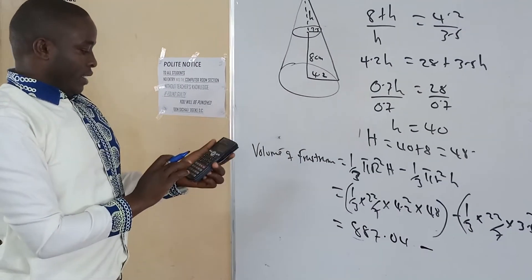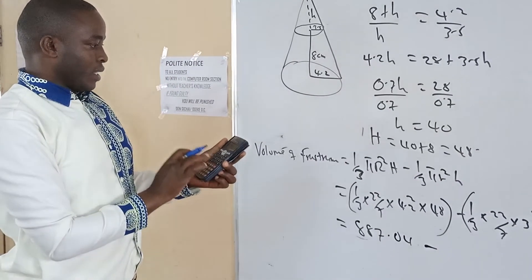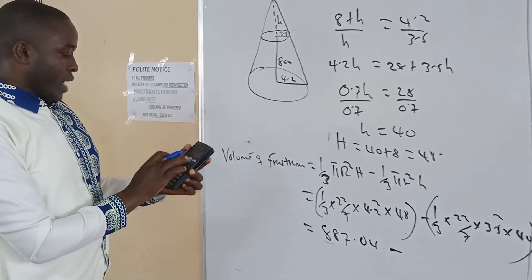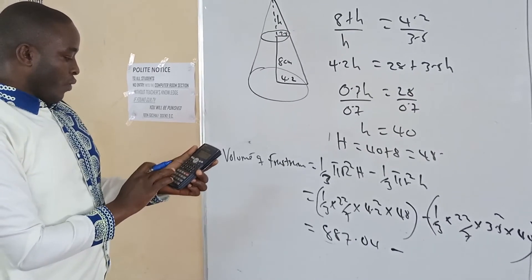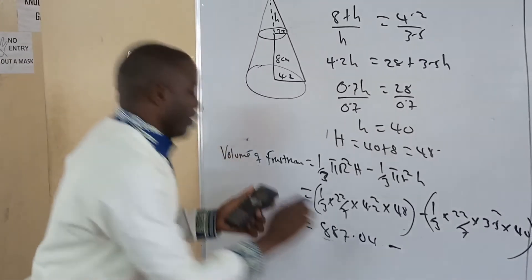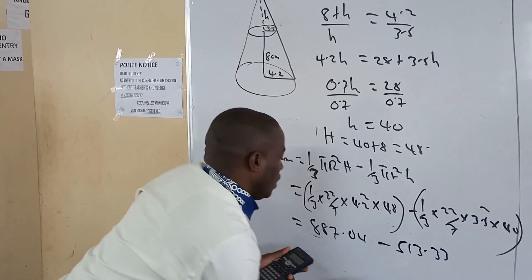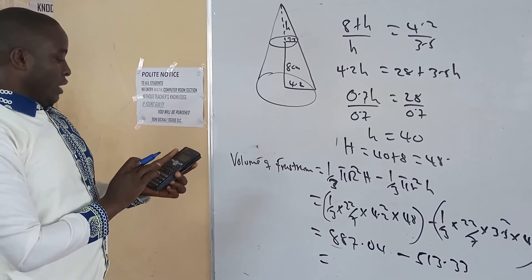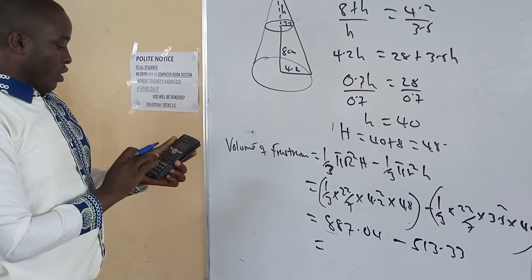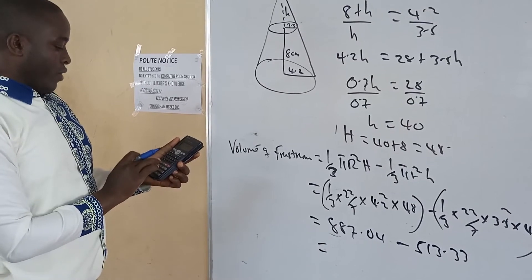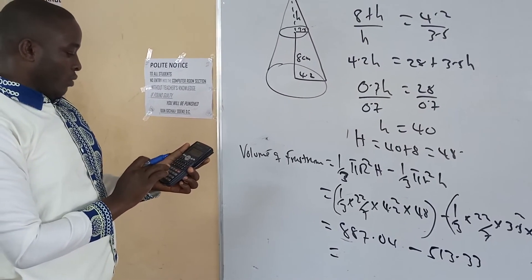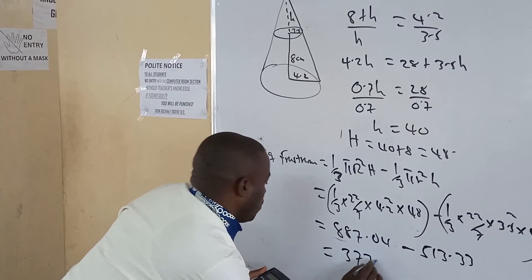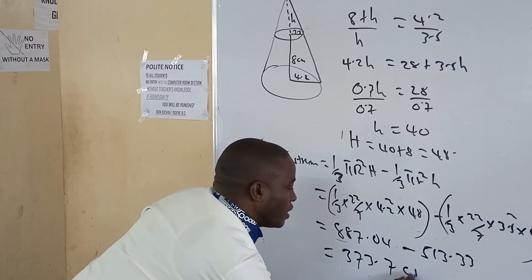Then minus the second term: one-third times 22/7 times 3.5 squared times 40, which gives 513.33. If we subtract the two: 887.04 minus 513.33, we get the answer to be 373.71 centimeters cubed.